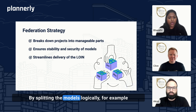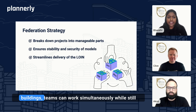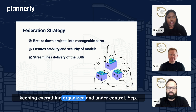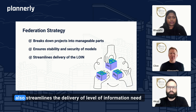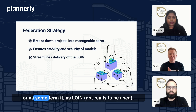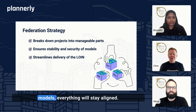By splitting the models logically — for example, by discipline or the asset or by buildings — teams can work simultaneously while still keeping everything organized and under control. This approach doesn't just make coordination easier, but it also streamlines the delivery of level of information need, or as some term it, LOIN. Whether it's architectural, structural, or MEP models, everything will stay aligned.